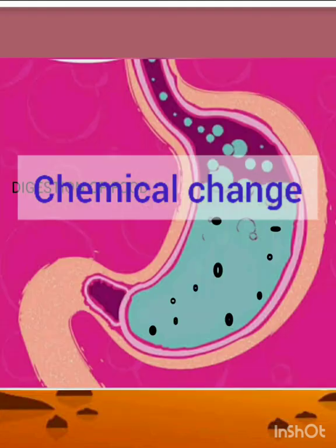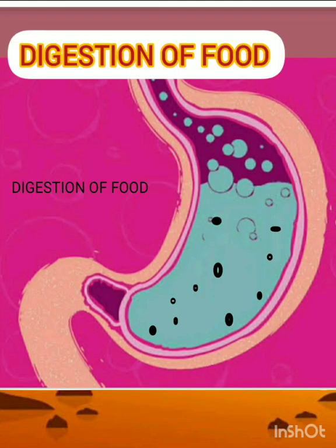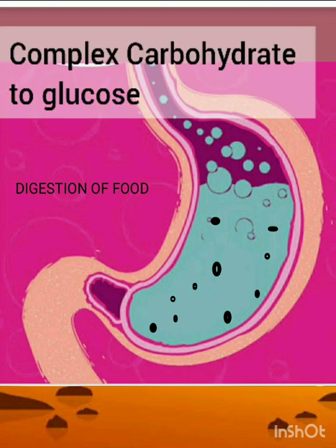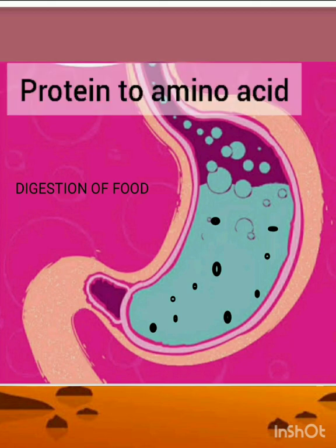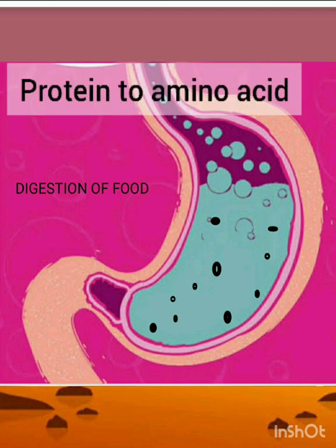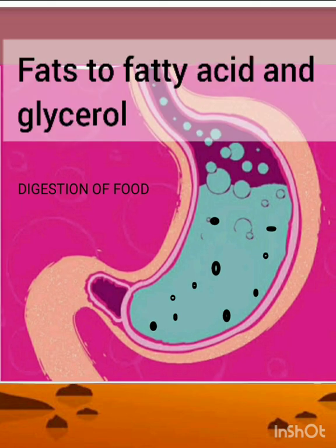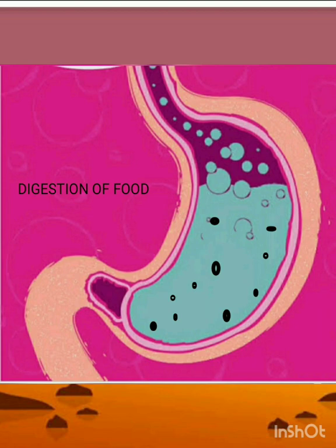The last example is digestion of food. During the process of digestion, the complex form of a substance is converted into its simplest form. Like carbohydrate is converted into sugar and sugar into glucose. Protein is converted into amino acid, and fats are converted into fatty acid and glycerol. So we can say that it is a type of chemical change, as new substances with different properties are formed after the reaction.